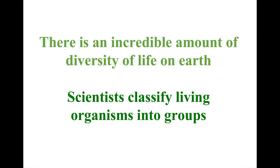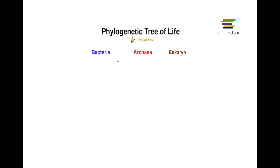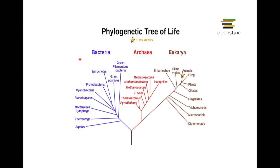In life, there's an incredible amount of diversity, and it can be overwhelming to study all these living things. So scientists classify living things into groups of organisms based on their similarities. We're going to look at the phylogenetic tree of life — phylogeny refers to the evolutionary relationships of different organisms. Life has been divided into three domains: bacteria, archaea, and eukarya.